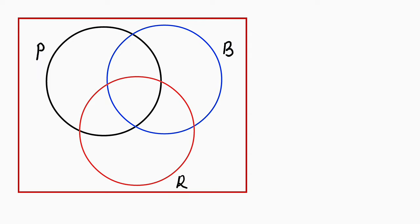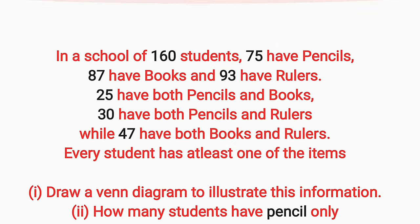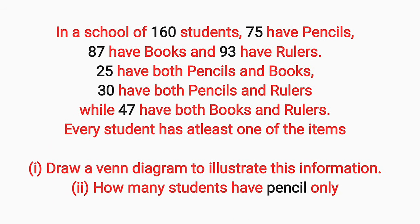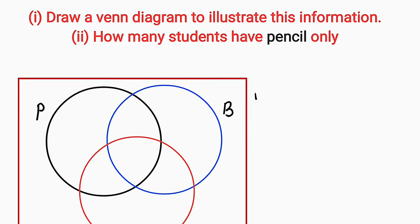Before we begin putting our information in, let us write our data. The first one we need to start with is the universal set — that is the number of students in the school. From the question, it stated that they are 160. Among these 160 students, 75 of them have pencils, so the number of students that have pencils is 75.